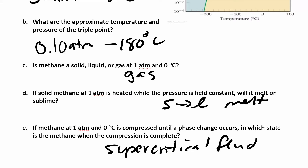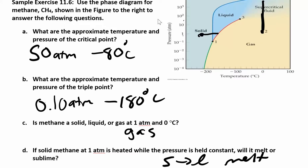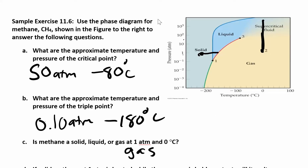There are more of these to do for homework, and you'll probably see something like this on a test. Just be able to navigate your way around a phase diagram. You have pressure versus temperature — remember, solids are at high pressure and low temperature, gases are at high temperature and low pressure, the supercritical fluid is when you have high pressure and high temperature working against each other, and the liquid is in the middle.